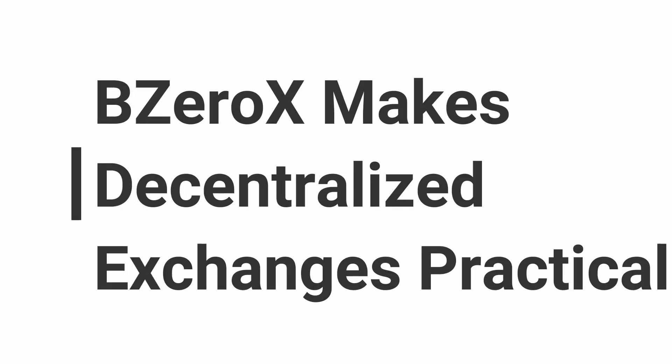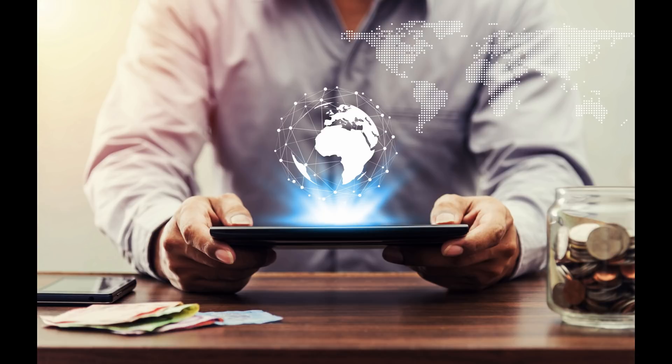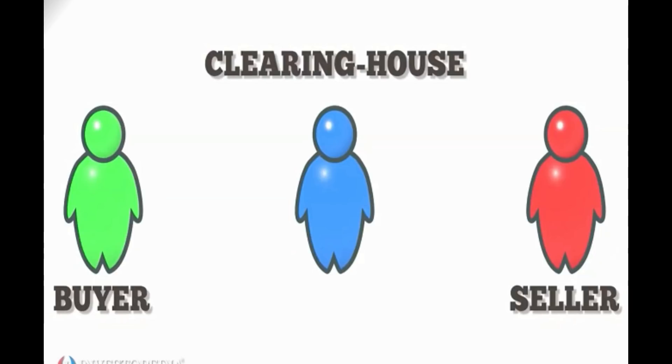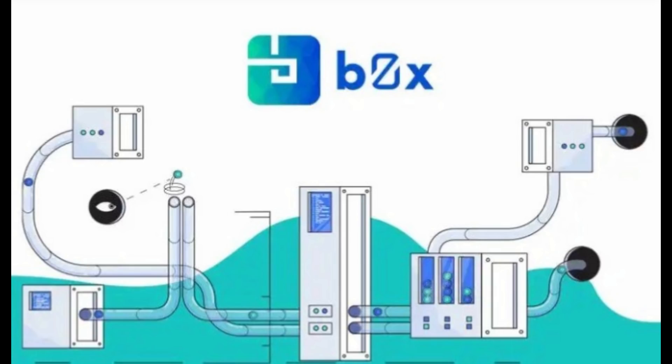Feature number two: B0X makes decentralized exchanges practical. Decentralized trades require functionalities like edge loaning and clearing houses. B0X makes these possible through trustless smart contracts.